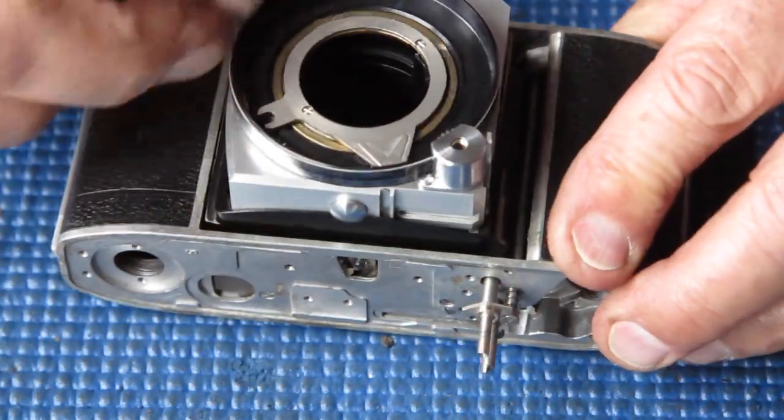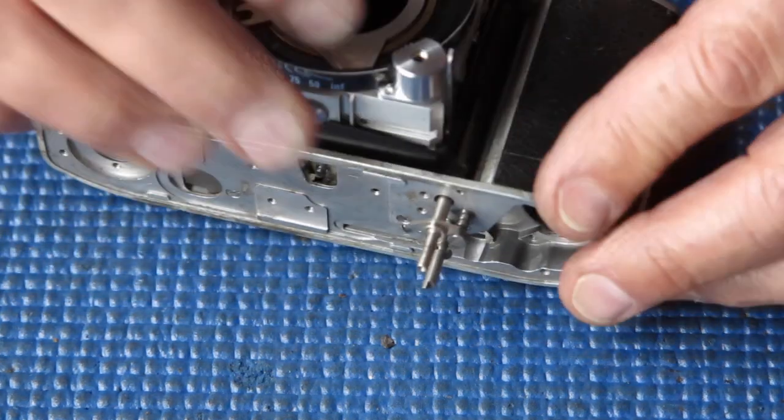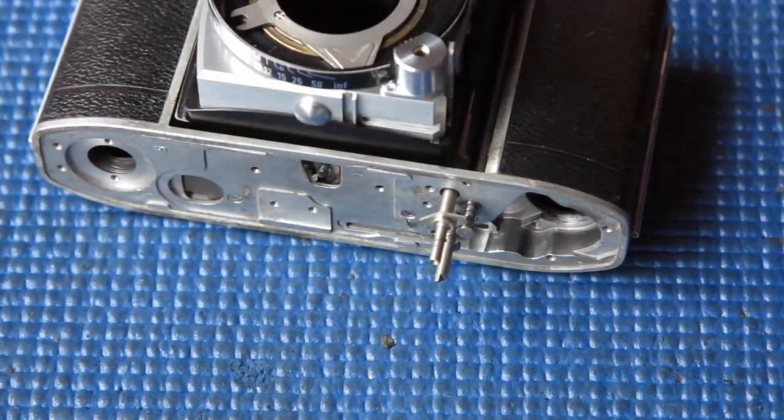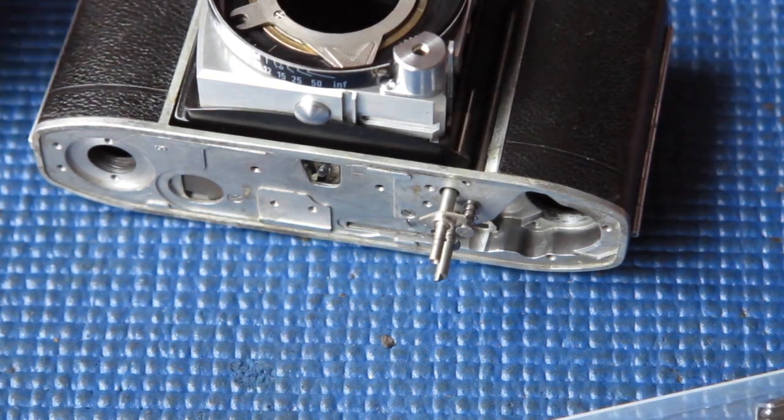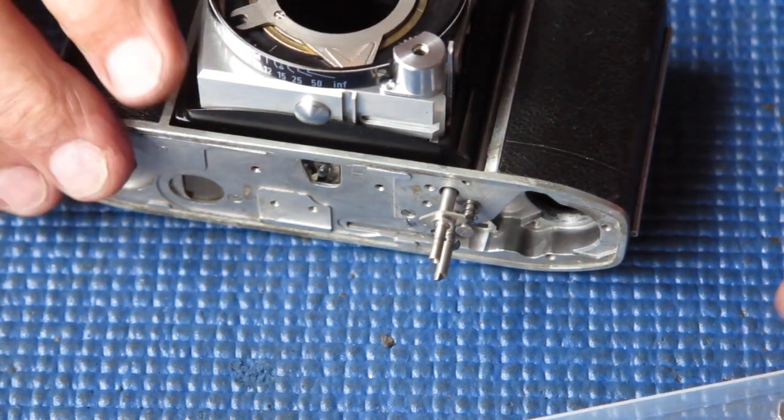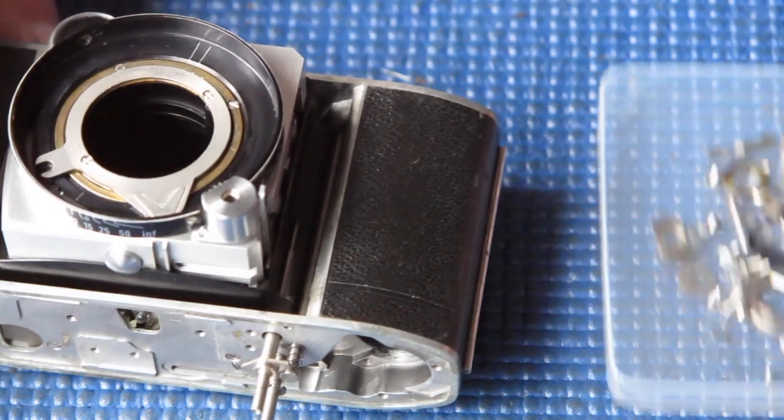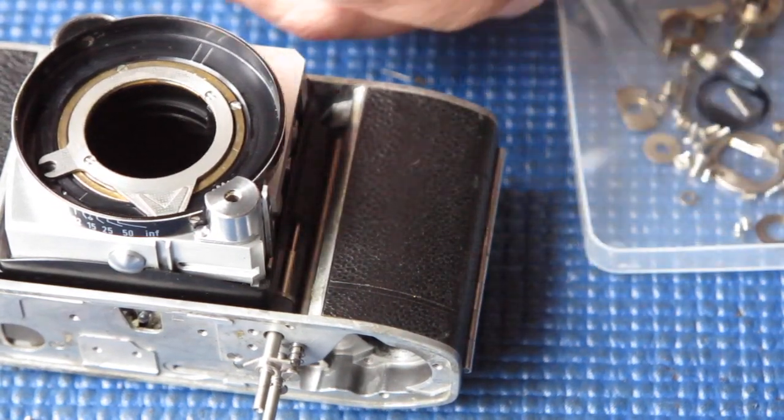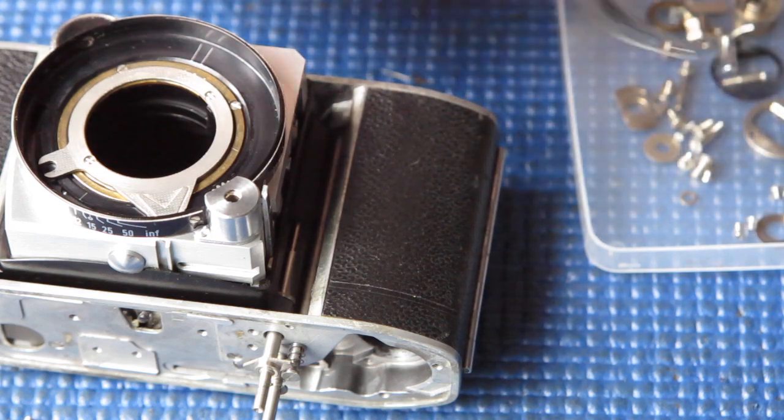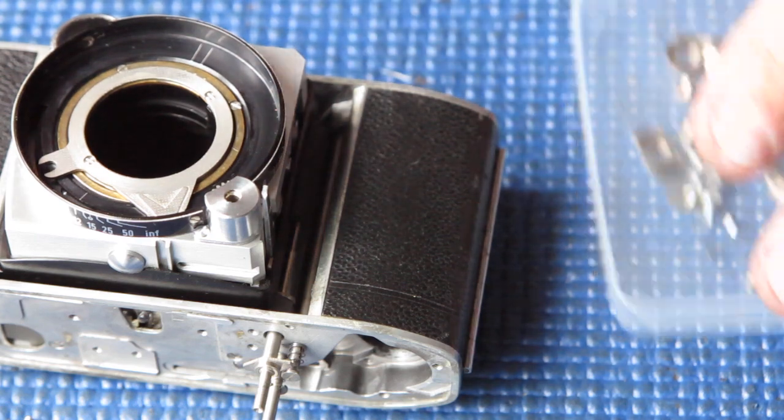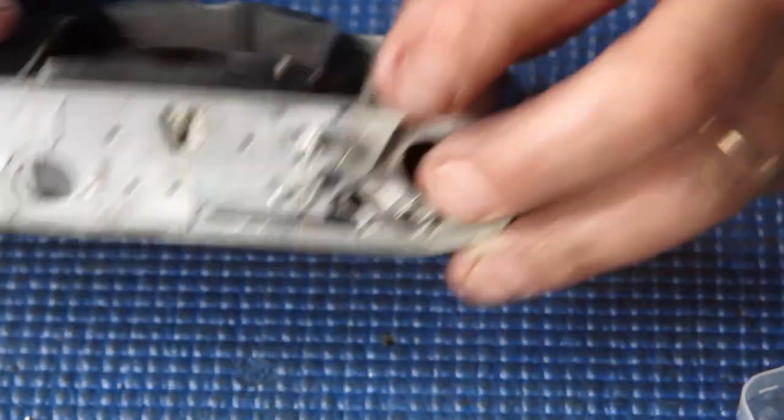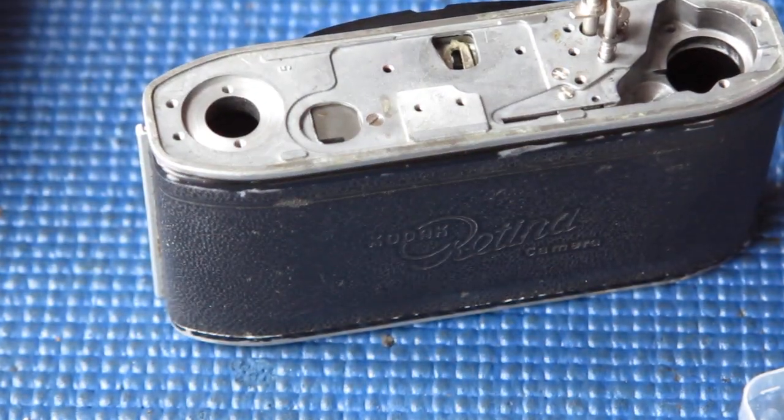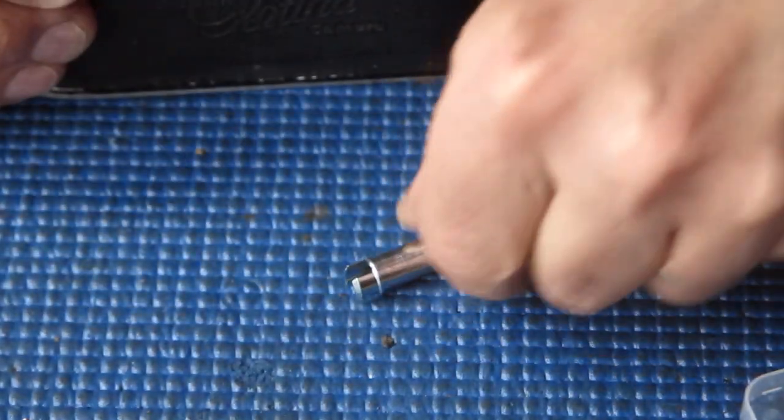I'm checking that the focus scale ring doesn't scuff against it and it doesn't. That's all good. So, the front collapses and opens smoothly as it should. Now, I'm going to leave that as it is collapsed. I'm going to put my rewind shaft in there now.